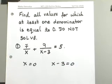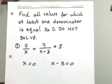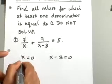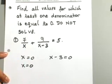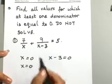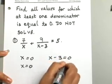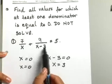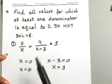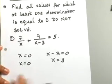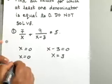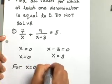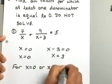We're trying to find when the denominators equal zero. For the first denominator, x, it equals zero when x itself is zero — your denominator will be zero. For the second equation, if you solve x minus three equals zero, x will equal three. When x equals three, your denominator equals zero because three minus three gives you zero. So for x equals zero and x equals three, your denominator will equal zero.